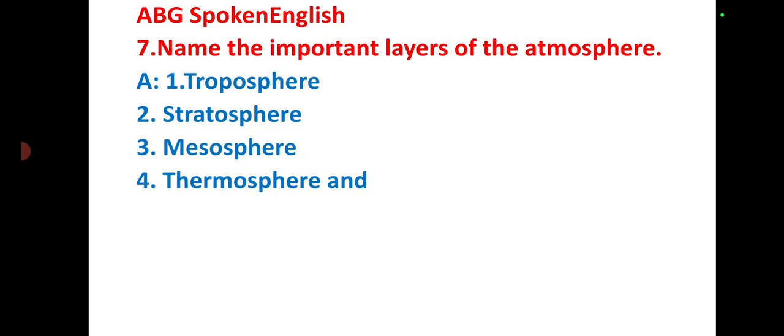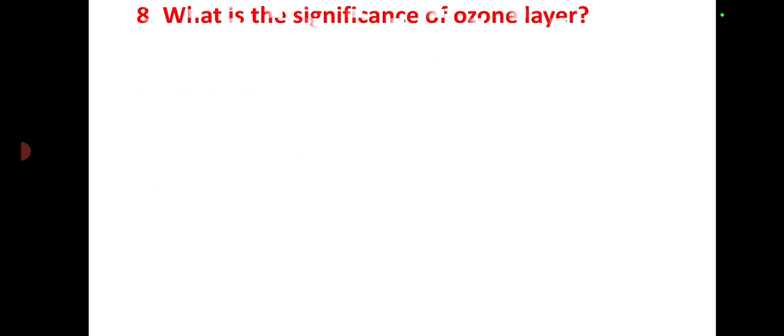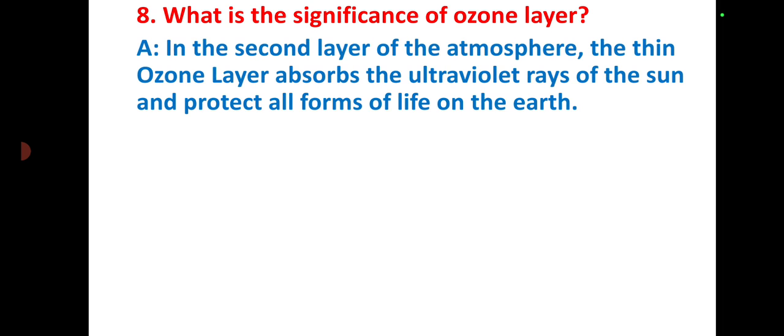What is significance of ozone layer? In the second layer of the atmosphere, the thin ozone layer absorbs the ultraviolet rays of the sun and protects all forms of life on the earth.